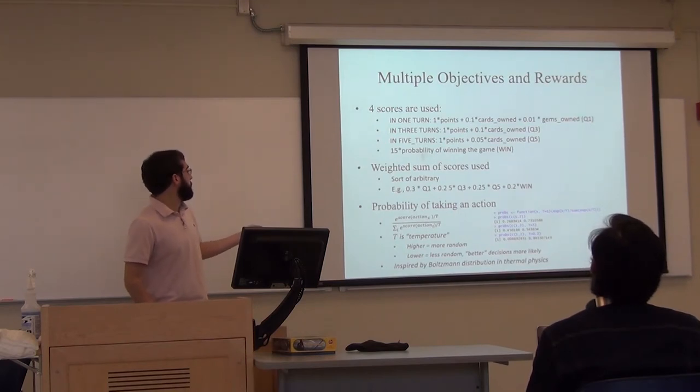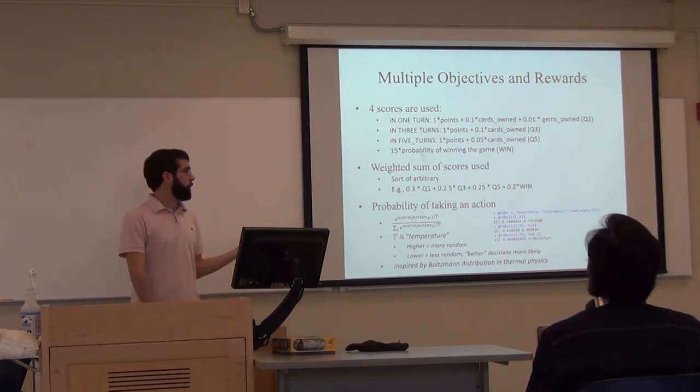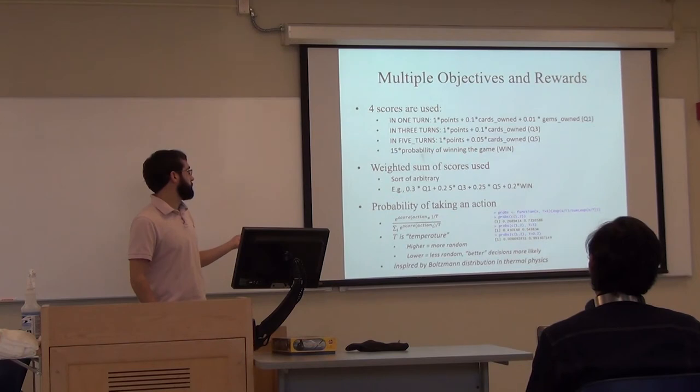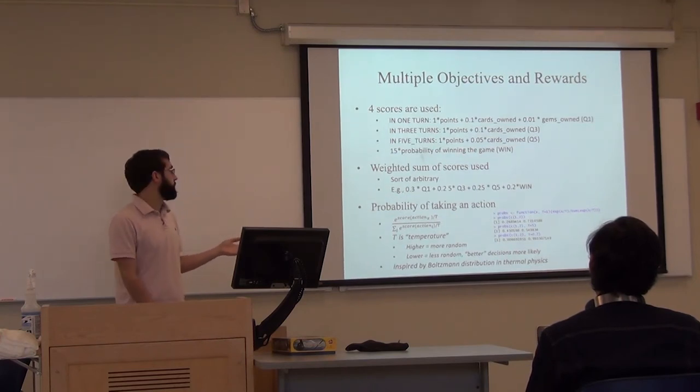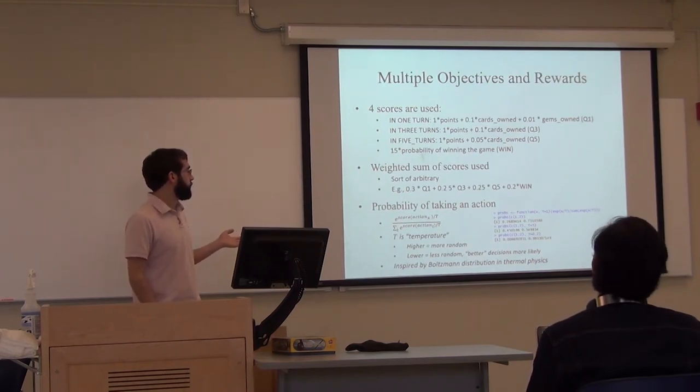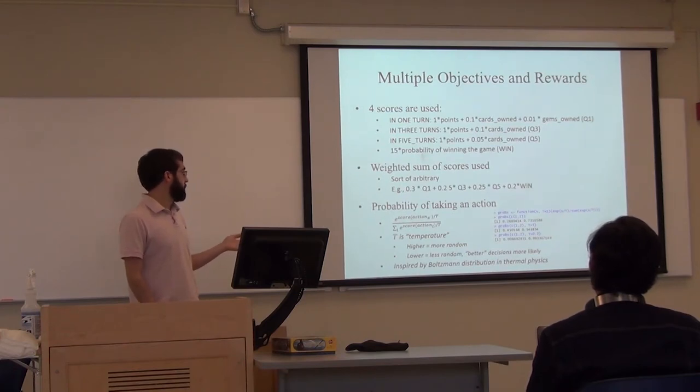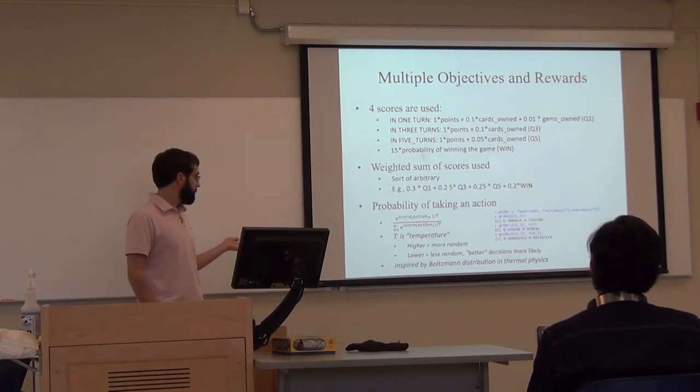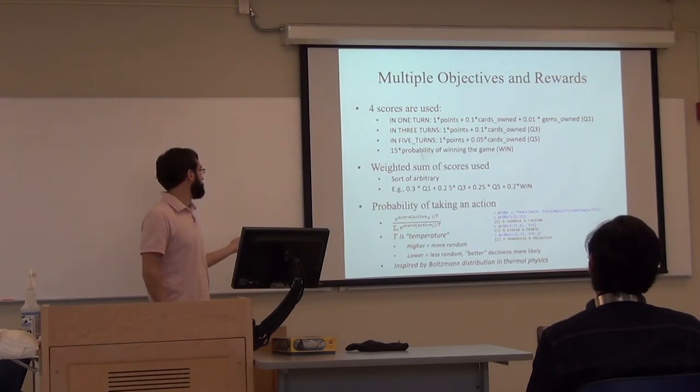The probability of taking an action - this is the last bit of math you'll see. I used this formula, which is basically inspired by a physics distribution called the Boltzmann distribution, where you take the exponential of the score divided by a temperature parameter, and then divide it over all the other scores divided by that. On the right you can see a bit of R code that describes how this works. Say that you had a predicted score of one and two. The probability with temperature of one is 26-27% chance of taking the first action and 73% chance of the second action. If you increase the temperature, you're increasing the randomness, and it's about 45 to 55%. If you decrease the temperature, you decrease the randomness, so it's less than 1% and over 99%. That's essentially how the decision-making process works with the AI.